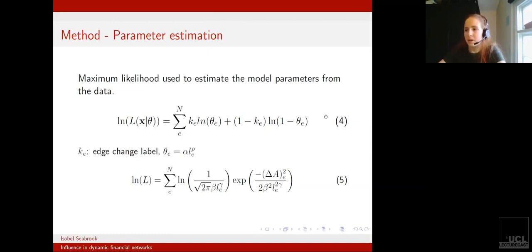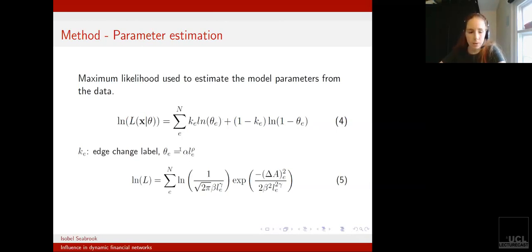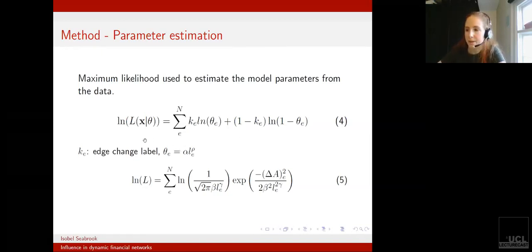Some of you will probably recognize that this is quite similar to the maximum likelihood for a coin toss. However, here we don't have a fixed parameter theta — theta varies with LE. So in order to solve this, we can't solve it analytically, and numerical optimization was used to find the parameters for different data.